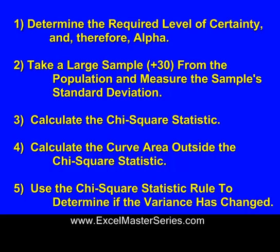The second step, you take a large sample of at least 30 from the population and you measure that sample's standard deviation. The third step, you calculate what's called the Chi-Square Statistic, and we'll show you how to do that.